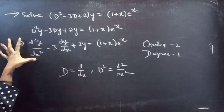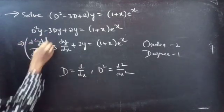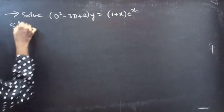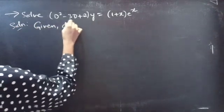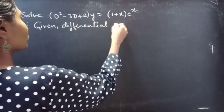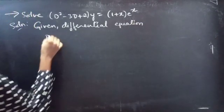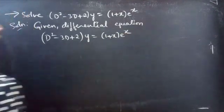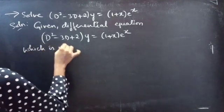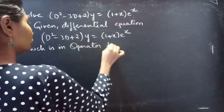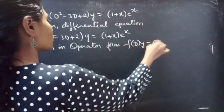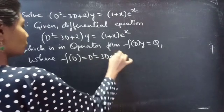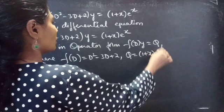Here, d²y/dx² is the highest derivative, so order is 2 and degree is 1. Now, the given differential equation in operator form is f(D)·y = Q, where f(D) = D² - 3D + 2 and Q = (1 + x)eˣ.